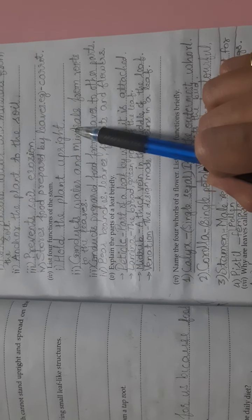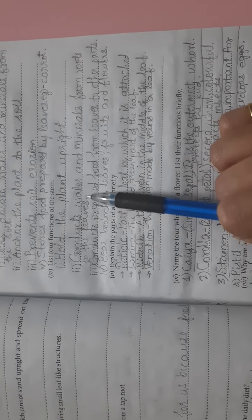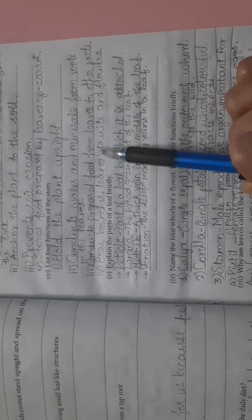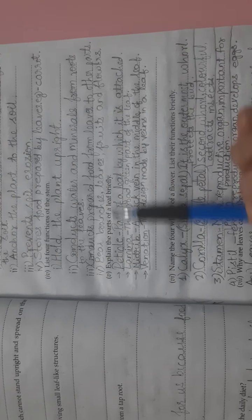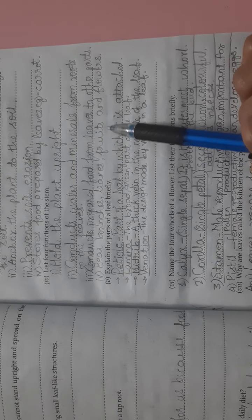Fourth question, list four functions of the stem. Stem holds the plant upright. Second, it conducts water and minerals from roots to the leaves. Third, conducts prepared food from leaves to other parts. Fourth, bears branches, leaves, fruits and flowers.